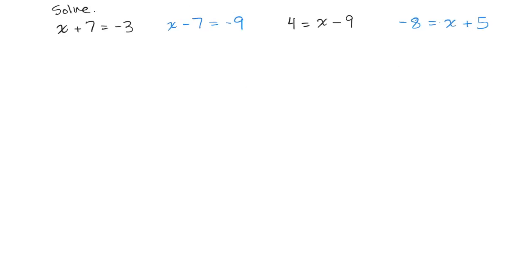Here's 4 for you to try. So put the video on pause and try these on your own. Hope you're back. Let's do these now. So we have X plus 7 equals negative 3. So let's go ahead and to get X isolated. We'll subtract 7 from both sides. And that way on the left, we have X equals negative 10. You could check it later.